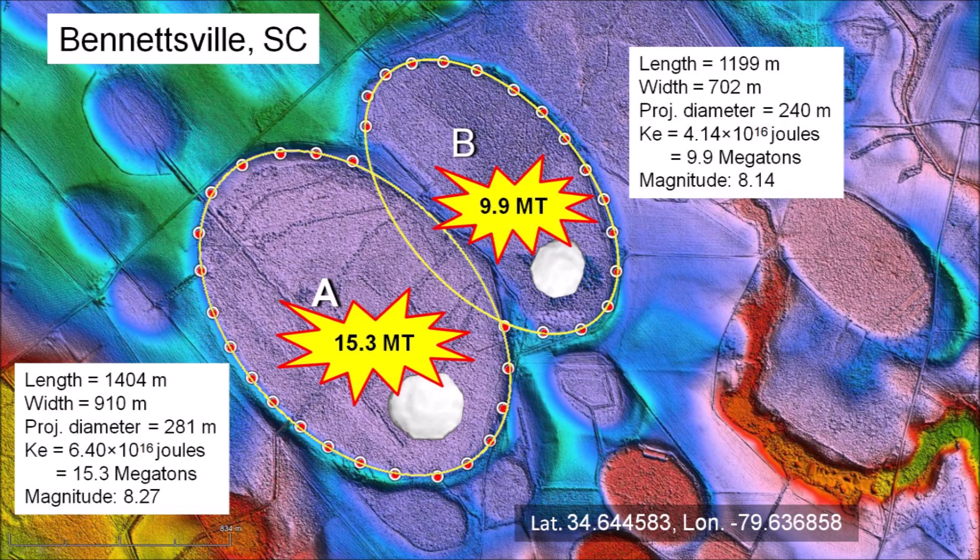The glacier ice projectiles that made these basins measured approximately one-fifth of the basin length. The impact that made basin A had kinetic energy equivalent to 15.3 megatons of TNT, and the impact that made basin B had energy equivalent to 9.9 megatons of TNT. Both of these impacts produced seismic vibrations exceeding magnitude 8, which is more than enough to liquefy unconsolidated ground.